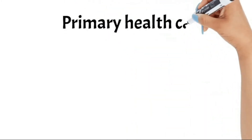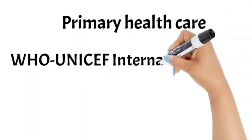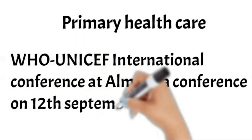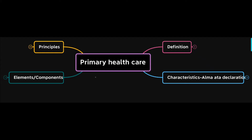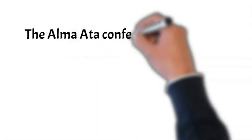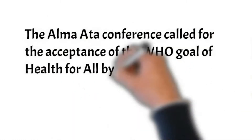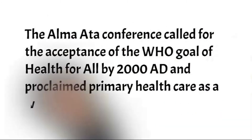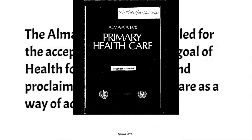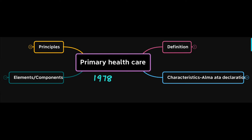The concept of primary health care came into existence following a joint WHO-UNICEF International Conference at Alma-Ata on 12th September 1978. The Alma-Ata Conference called for the acceptance of the WHO goal of Health for All by 2000 AD and proclaimed primary health care as a way of achieving health for all.